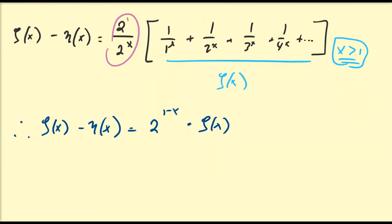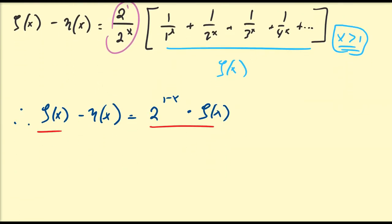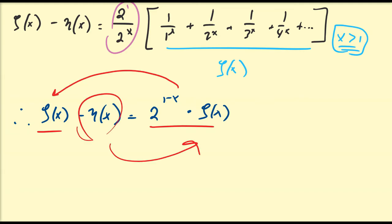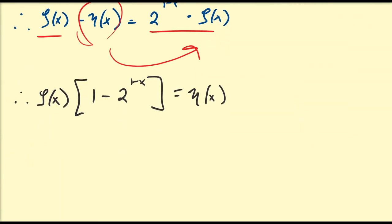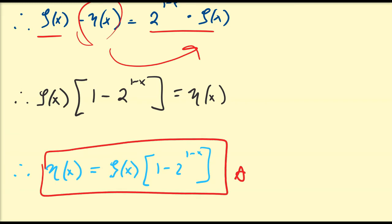Grouping like terms of zeta, we bring eta of x to the right and the exponential zeta term to the left, giving zeta of x times (1 minus 2^(1−x)) equals eta of x. Or equivalently, zeta of x equals eta of x divided by (1 minus 2^(1−x)). This is the direct connection between the zeta and eta functions.